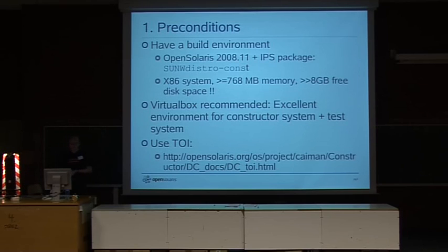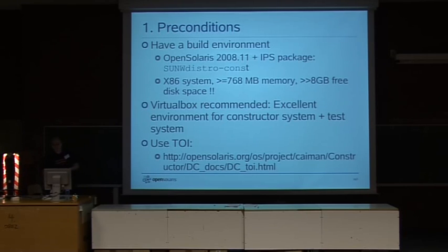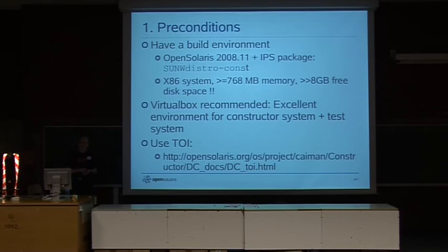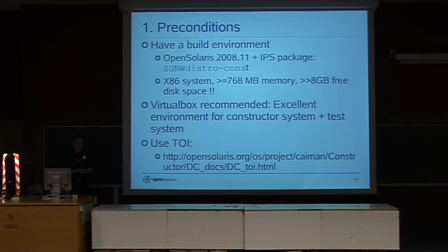Here are the steps you need to follow. First, beef up your current OpenSolaris installation with the package called SunWDistroConst, which downloads through IPS. You need an x86 system with 786 MB of main memory, and you should have 8 GB of free space — actually 10, 12, or 15 GB — because it builds the entire file structure and that takes quite some disk space. VirtualBox will become your best friend, because it allows you to test your results without needing too many PCs, and it works seamlessly with the ISO images you create and with OpenSolaris.